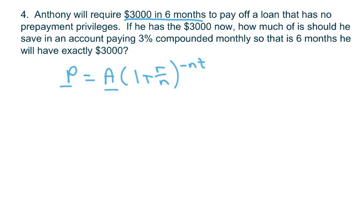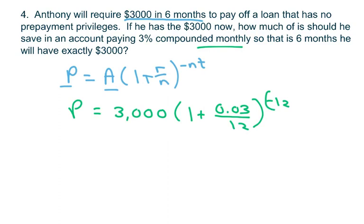We get P equals 3,000 times (1 plus 0.03 over 12) to the negative 12, because it's compounded monthly. And we need how many? Six months. So that's half, that's going to be half a year, so we're going to put 0.5 here. And that gives you $2,955.39.